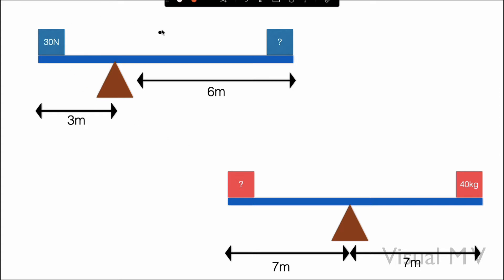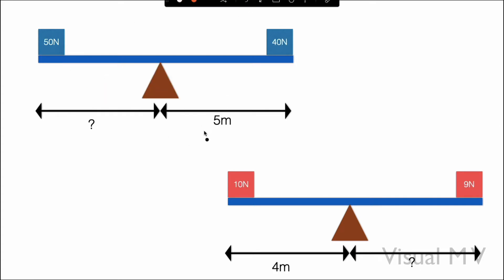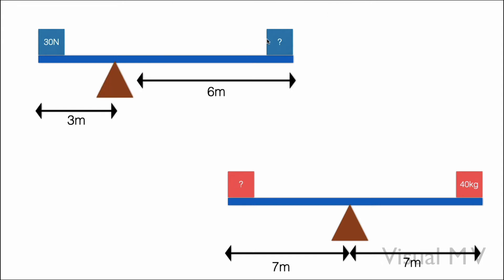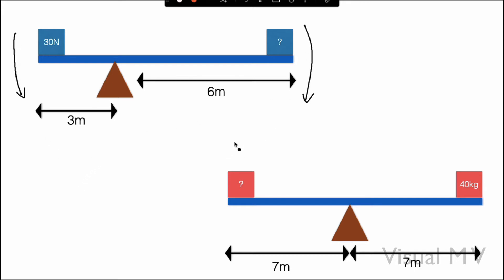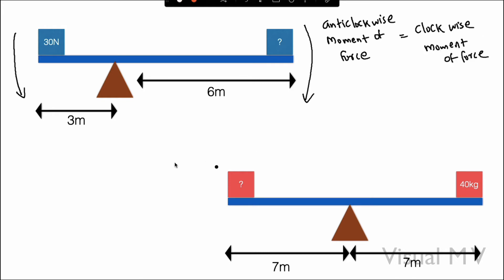All cases here are balanced cases. On the left side, there is 30 Newton at a distance of 3 meters — that is the anti-clockwise moment of force. On the right side, there is a clockwise moment of force. Our equation is: anti-clockwise moment of force equals clockwise moment of force. So the anti-clockwise moment is 30 into 3, and the equation for moment is force into distance.